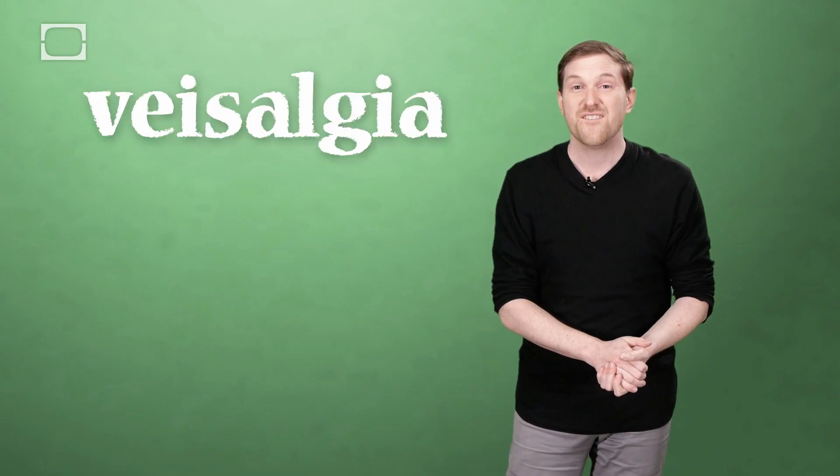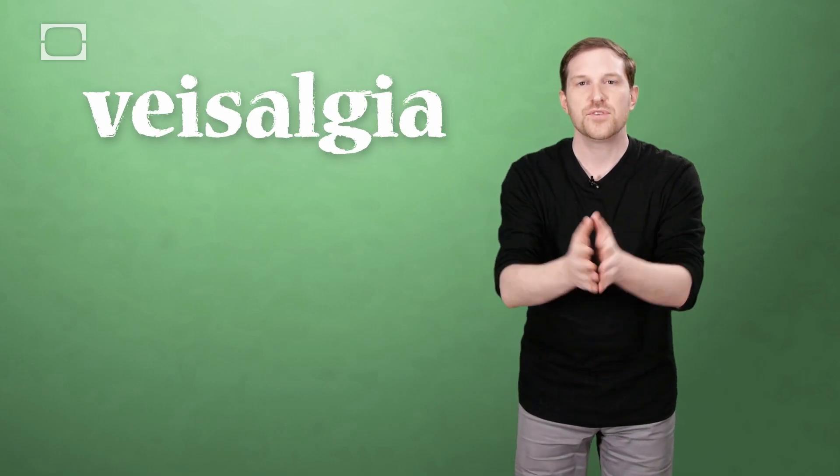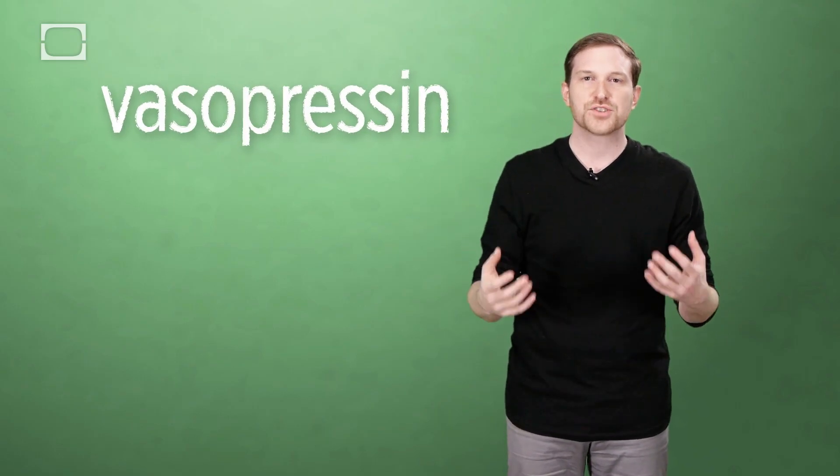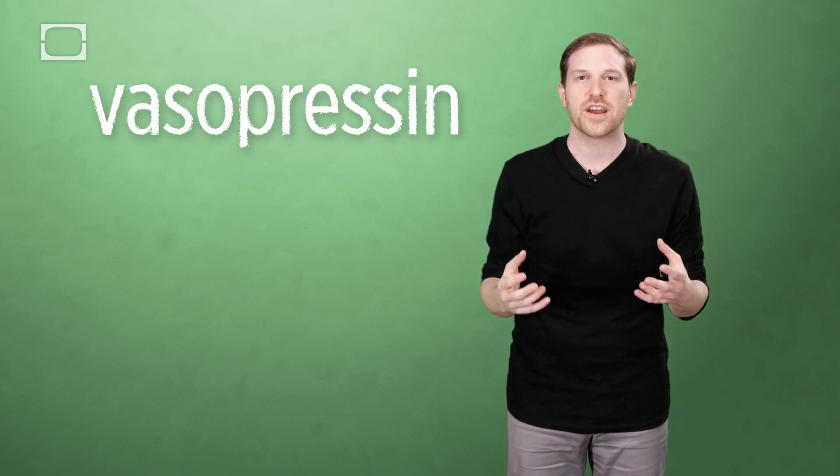Hangover is the street name for the more formal term veisalgia. So what happens when you drink alcohol, one thing that occurs is that your pituitary gland stops producing something called vasopressin. Now, vasopressin is an anti-diuretic hormone.